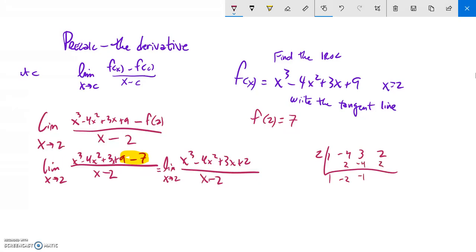Lovely. So this divides down to x squared minus 2x minus 1. So if I do this division again—I'm still taking the limit—but this is equal to x squared minus 2x minus 1.